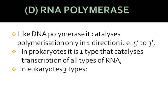Next is RNA polymerase. This enzyme is also called DNA-dependent RNA polymerase because it requires a DNA template. Like DNA polymerase, it catalyzes polymerization only in one direction, that is the 5 prime to 3 prime direction. In prokaryotes like bacteria, only one type of RNA polymerase catalyzes the transcription of all types of RNA.